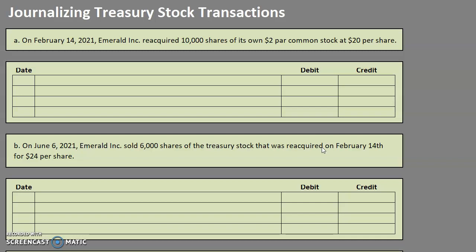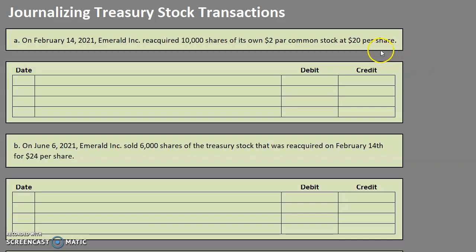So let's take a look at this first one. On February 14, 2021, Emerald Incorporated reacquired 10,000 shares of its own $2 par common stock at $20 per share.